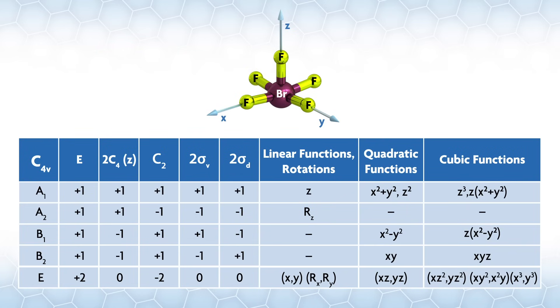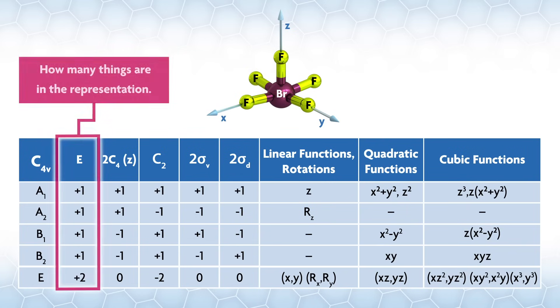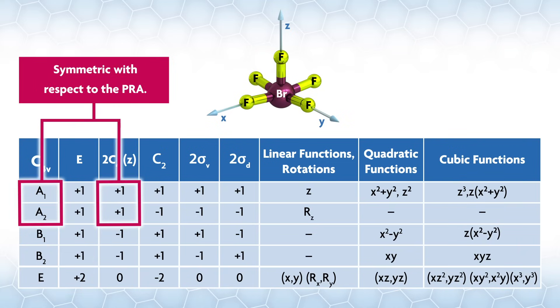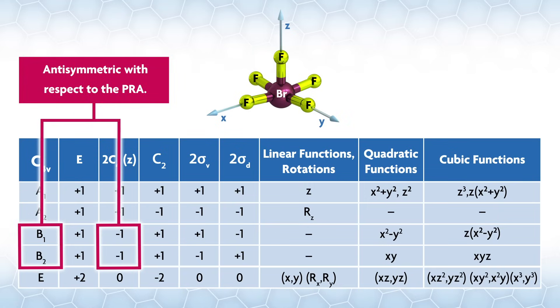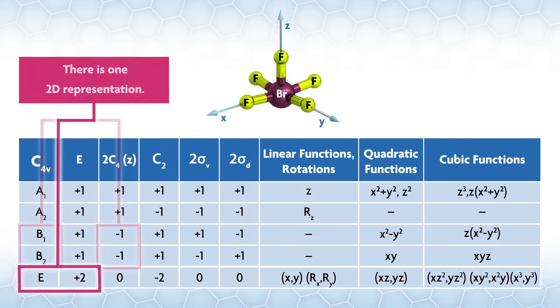So looking at the simple C4v character table, we can look down the column under the identity operation, E. There are four different irreducible reps with plus one and one with plus two. The dimensionality of the rep is always given under identity. Under E will be how many things are in the representation. To decide which of the one-dimensional representations are A's and which are B's, we look at the principal rotation axis, in this case C4. If the representation is symmetric with respect to the principal rotation axis, there is a plus one and is given an A. If it is anti-symmetric with a negative one, it is given a B. There's one 2D representation, so it is given E. Since there's only one 2D rep, we don't need to put anything except E to make it unique.